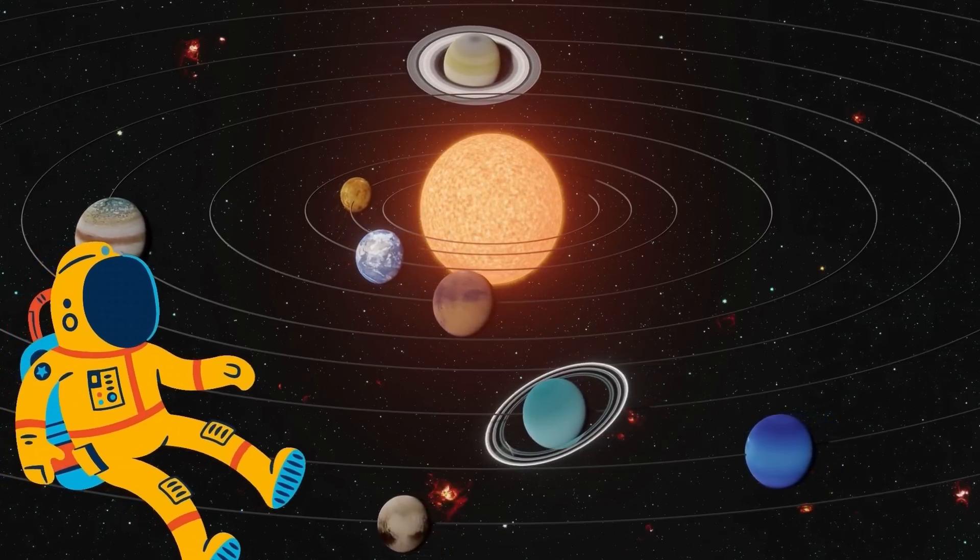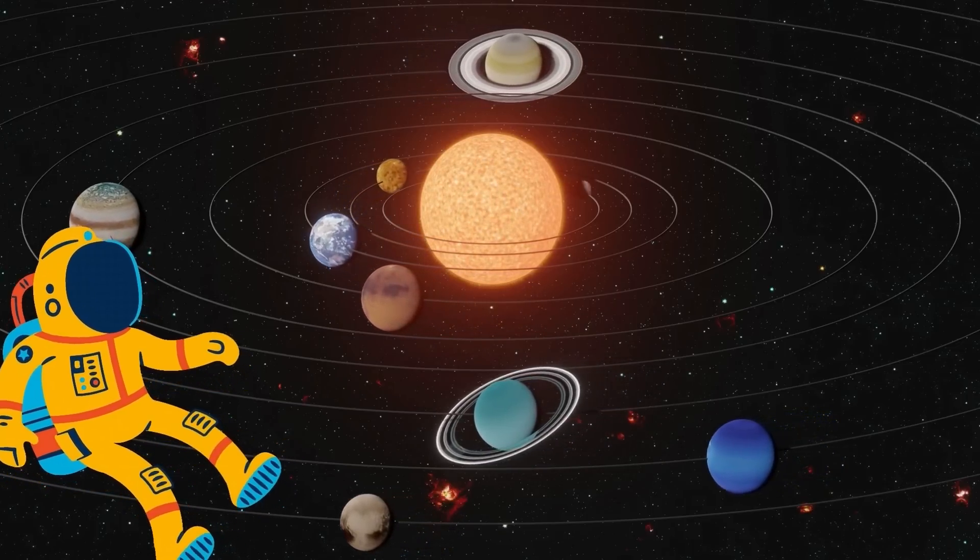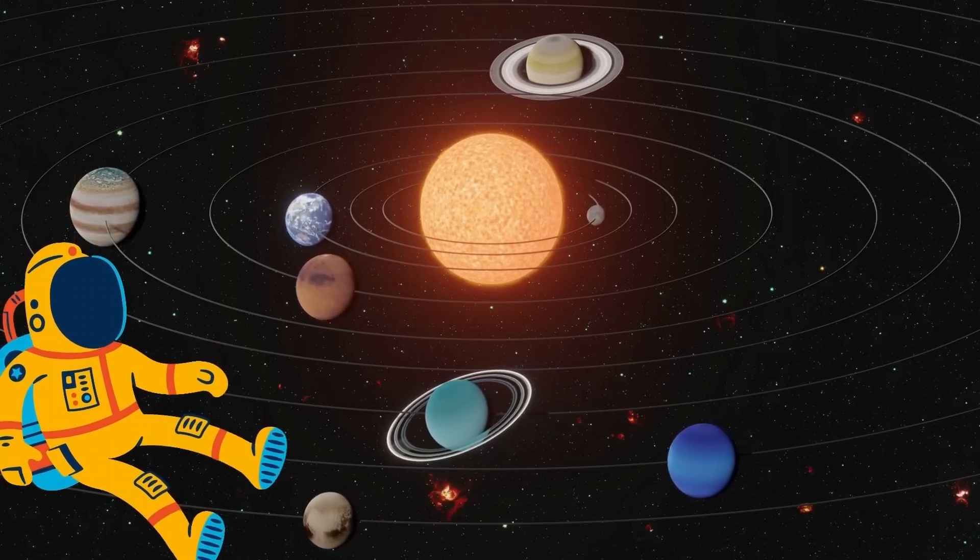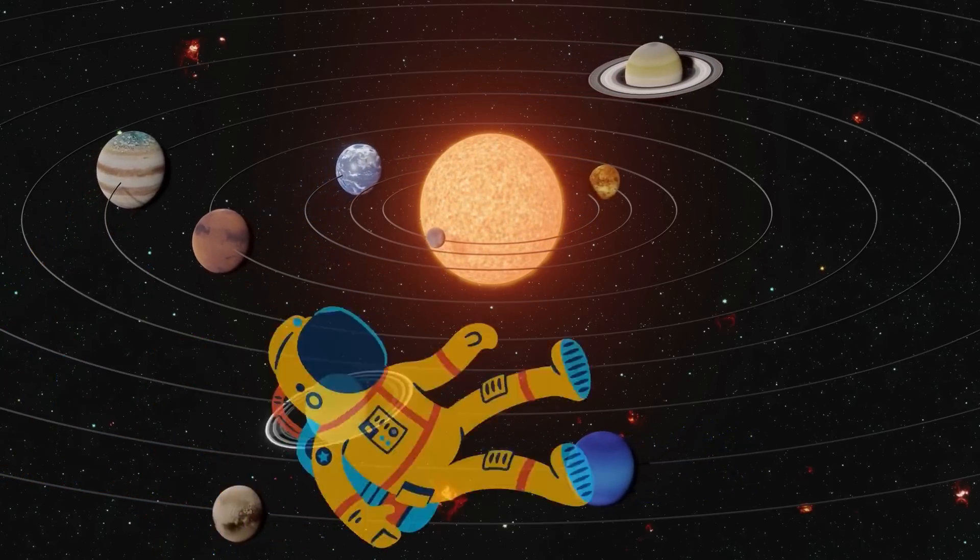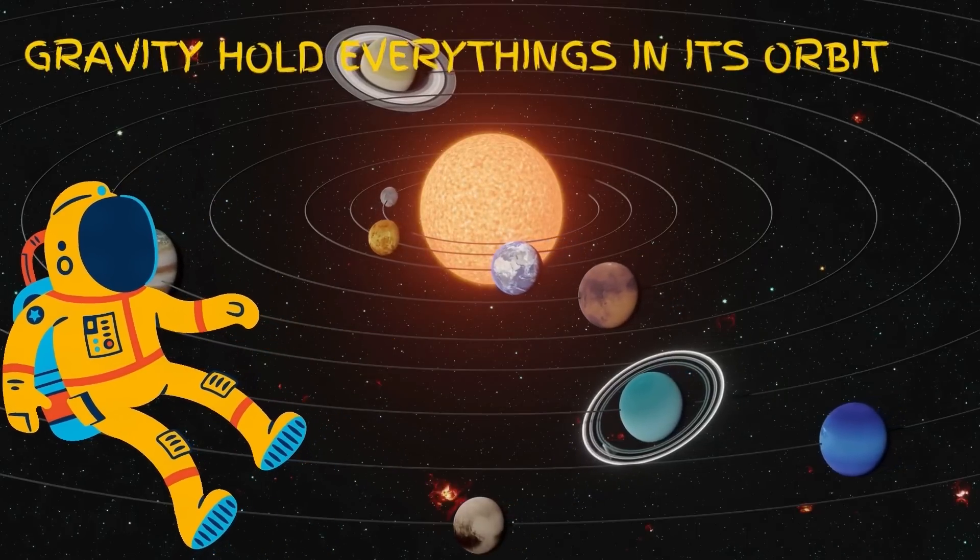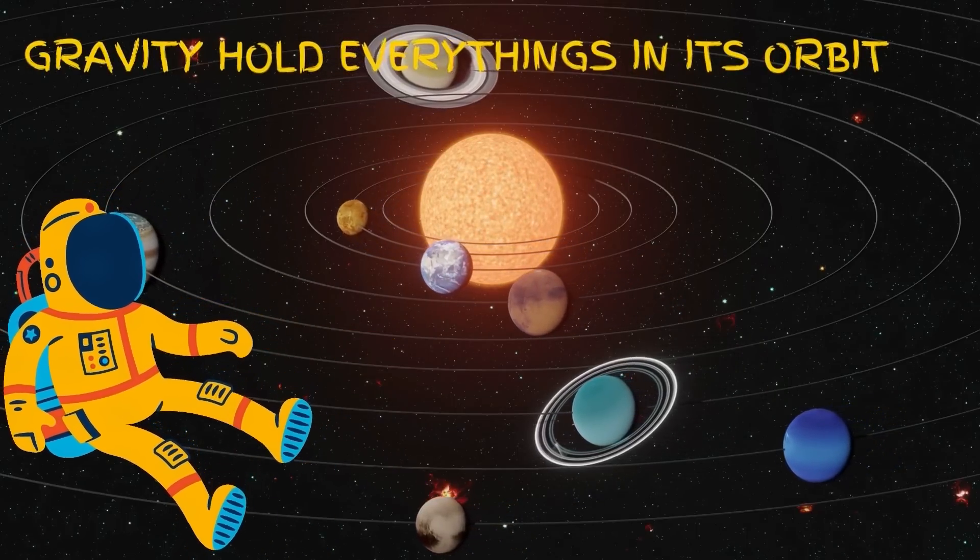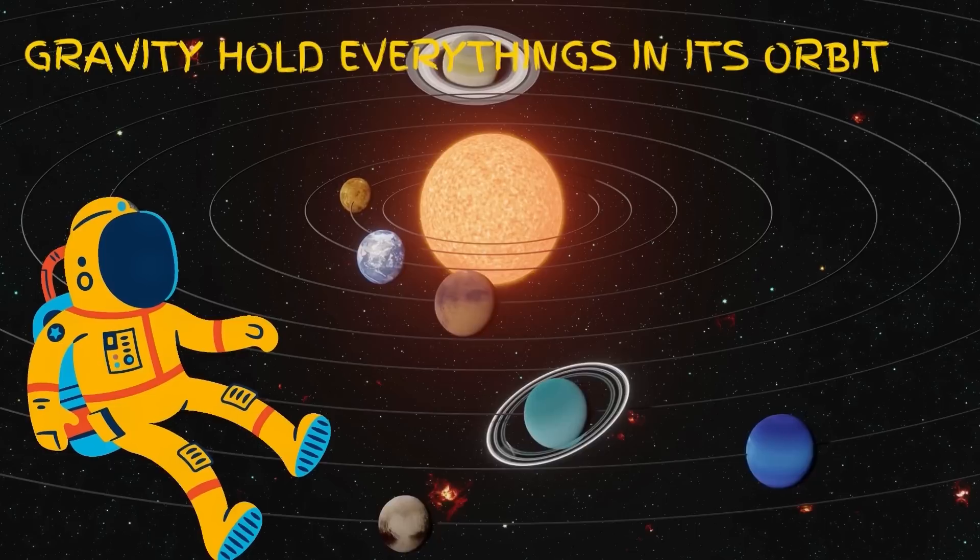Planets, asteroids, comets, and debris all revolve around the sun. The sun is the central star of the solar system and its gravity holds everything in its orbit.